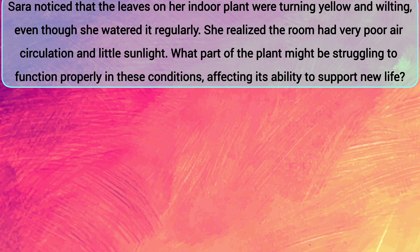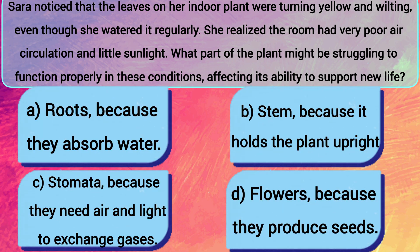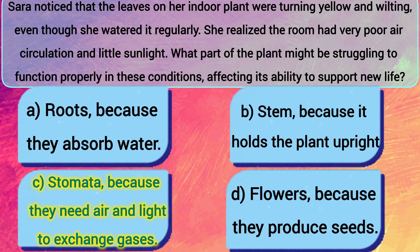Sarah noticed that the leaves on her indoor plant were turning yellow and wilting, even though she watered it regularly. She realized the room had very poor air circulation and little sunlight. What part of the plant might be struggling to function properly, affecting its ability to support new life? A: Roots, because they absorb water. B: Stem, because it holds the plant upright. C: Stomata, because they need air and light to exchange gases. D: Flowers, because they produce seeds. The answer is C — stomata, because they need air and light to exchange gases.